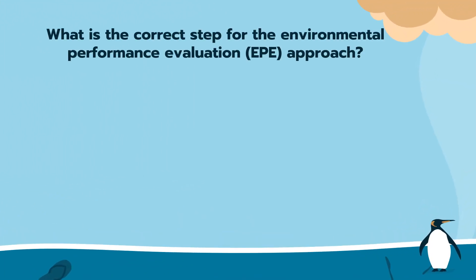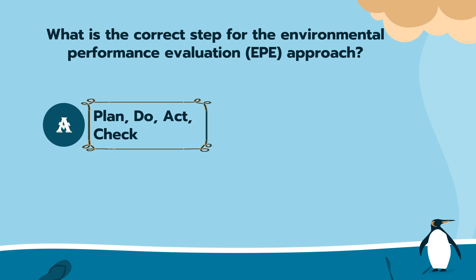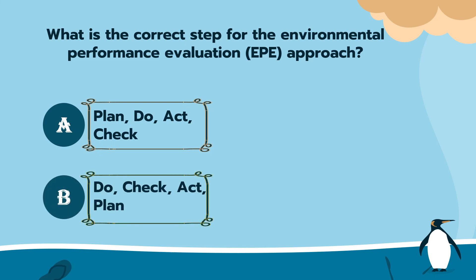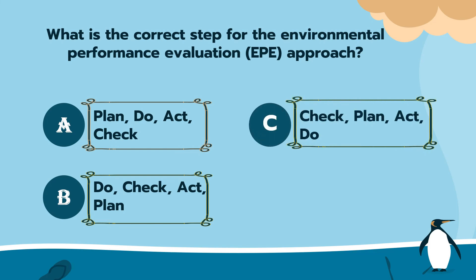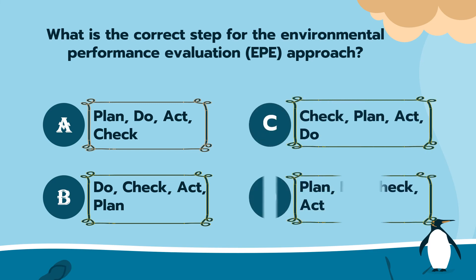Next question. What is the correct step for the Environmental Performance Evaluation, EPE, approach? A. Plan, do, act, and check. B. Do, check, act, and plan. C. Check, plan, act, and do. D. Plan, do, check, and act. The answer is D — Plan, do, check, and act.